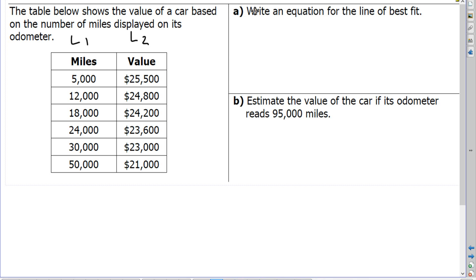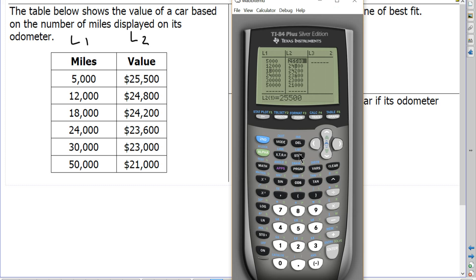Now if I want to calculate the line of best fit, or the linear regression, I go back to my stat button, but I don't edit the data. I want to calculate the data. So I'm going to press the right arrow to get to the calc menu, and I'm going to choose number 4, linear regression. It's going to come out in the form of ax plus b. Linear is y equals mx plus b, right? So linear regression is ax plus b.